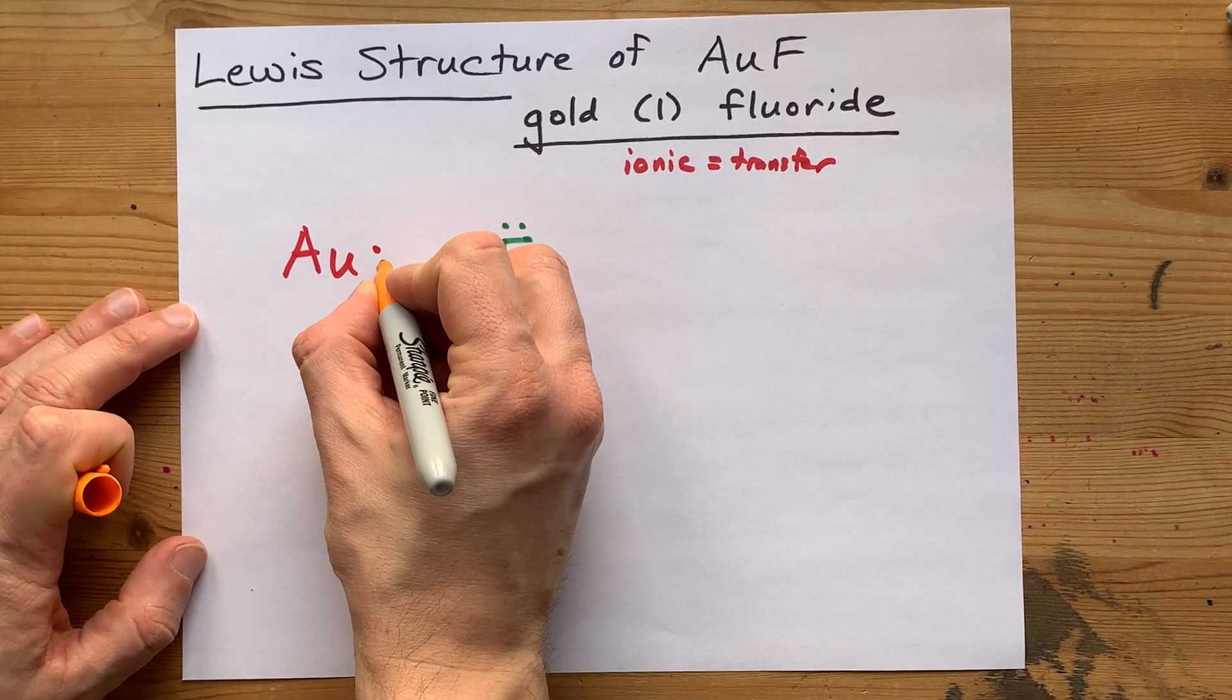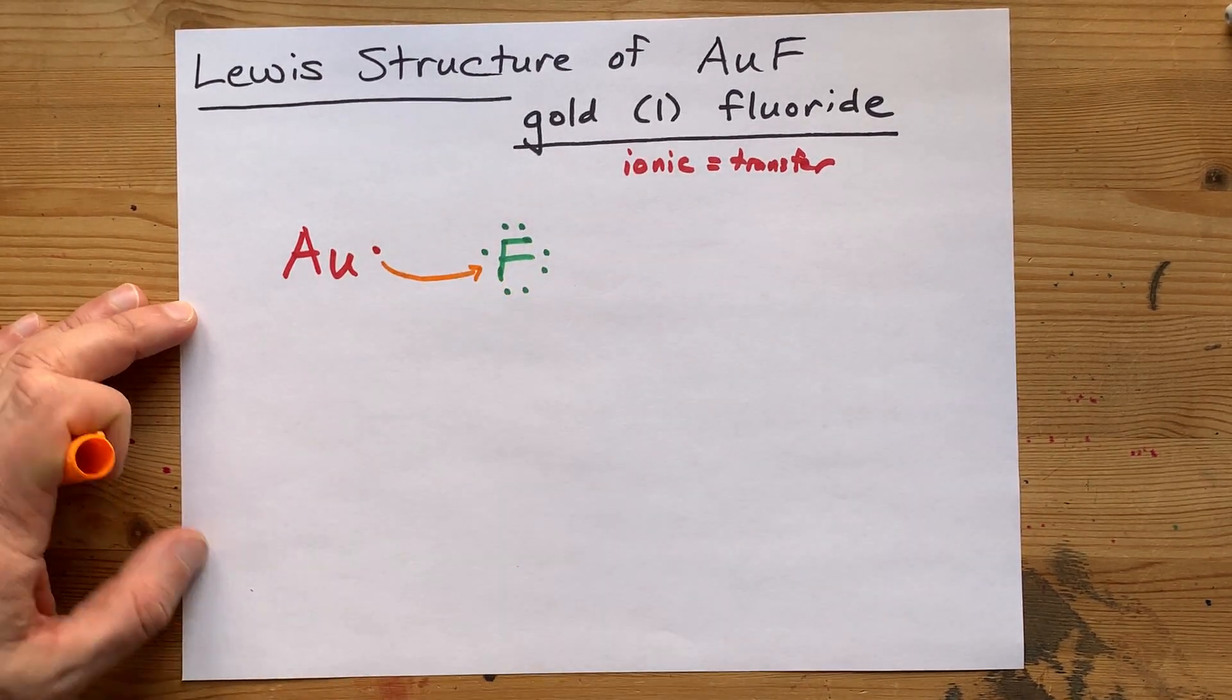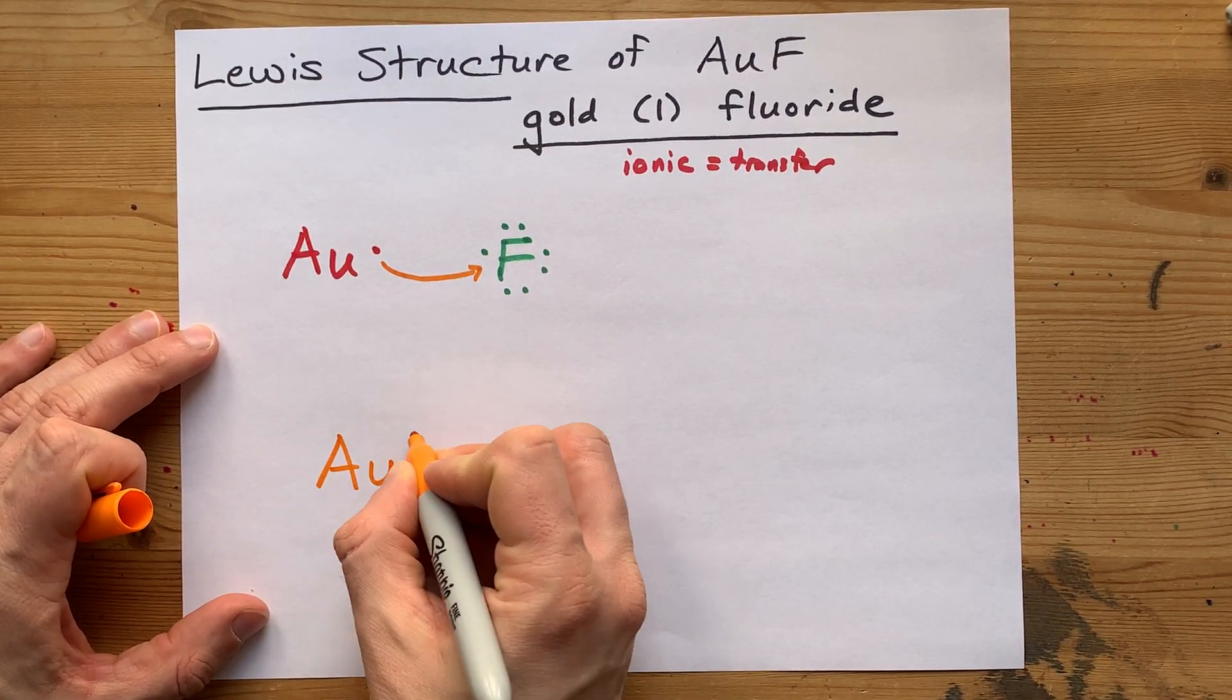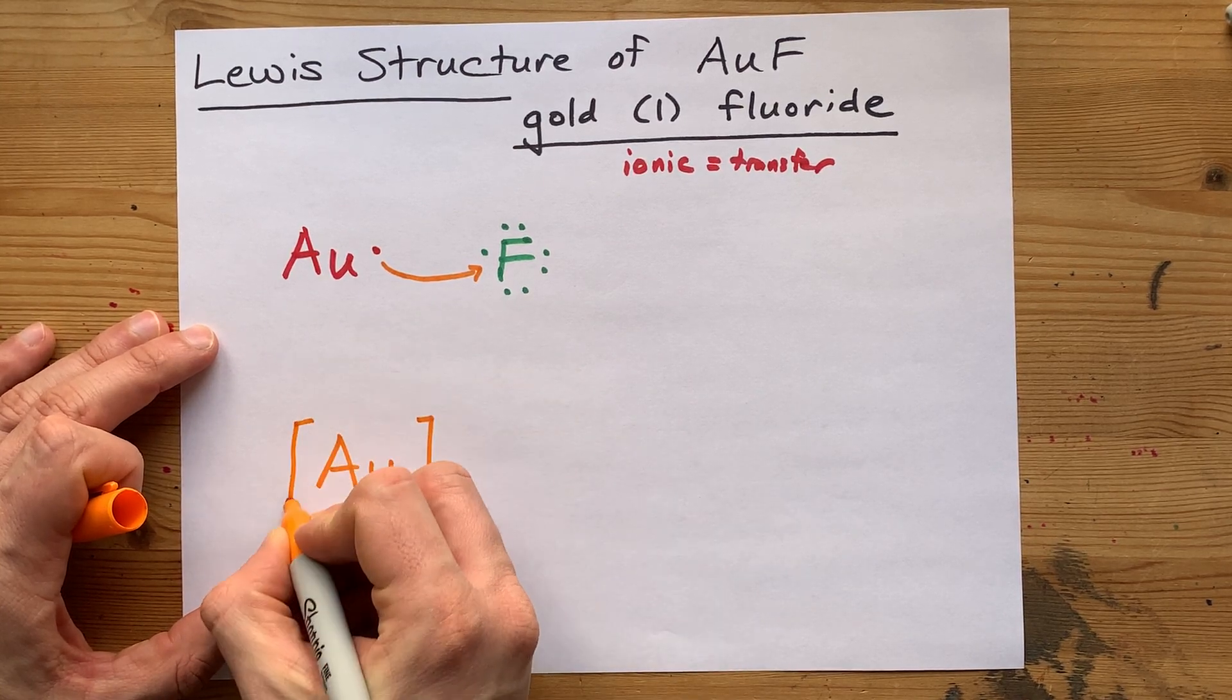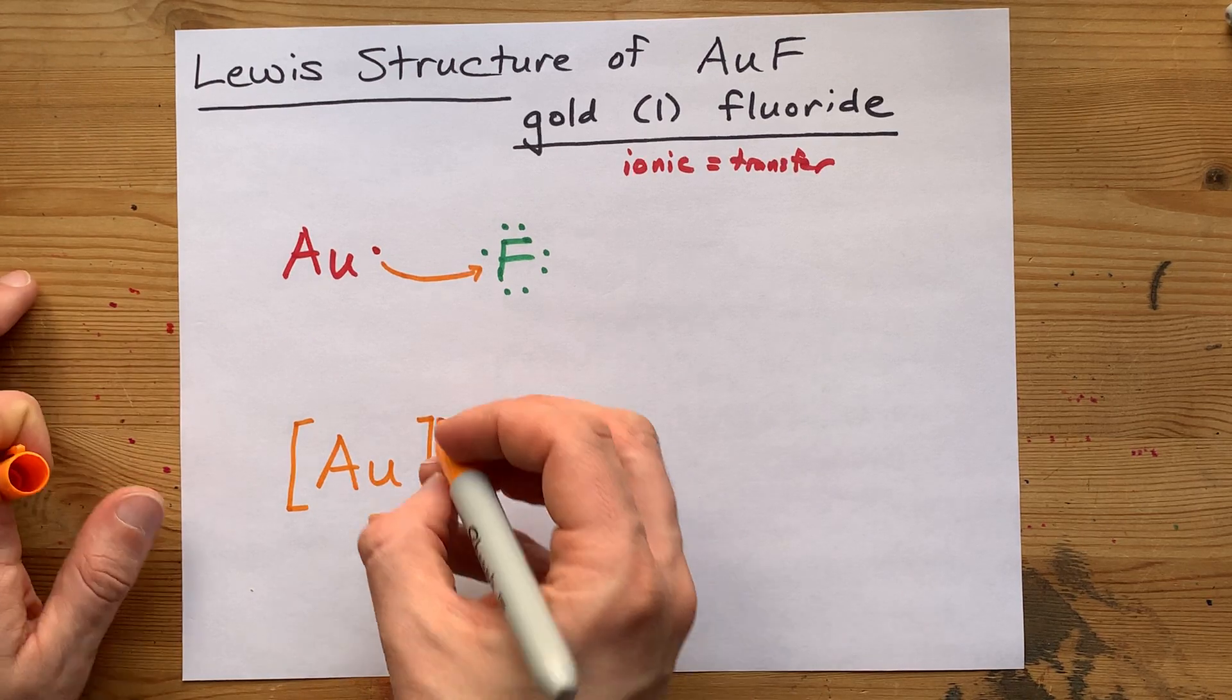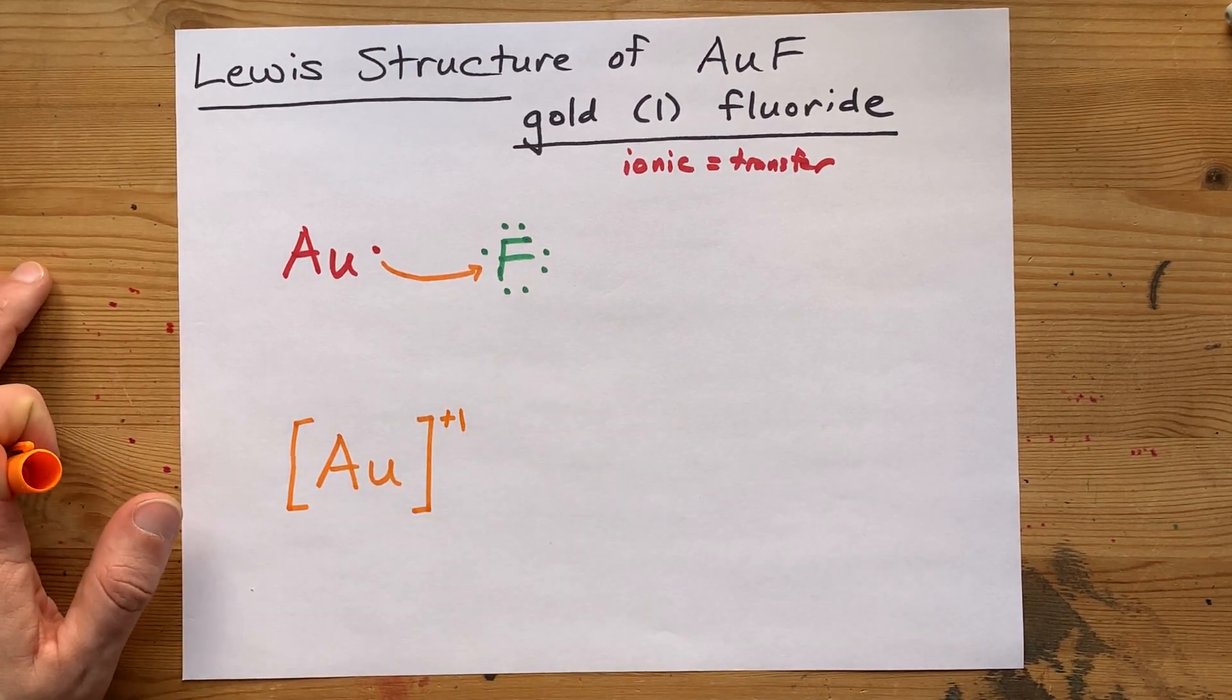Gold willingly gives up its electron to fluorine. It becomes stable because now it has no valence electrons or rather its outer shell is empty, at least according to the way we're drawing this Lewis structure. It's got a plus one charge.